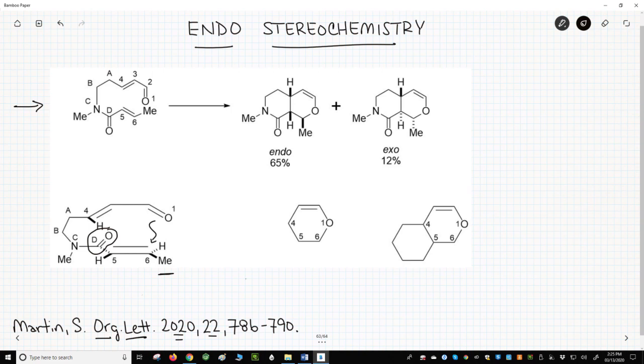Once the Diels-Alder reaction occurs, we'll go to the right for the product. The main ring is already drawn and numbered. For stereochemistry, all the groups that have bold up bonds are up in the product. The other positions are down.